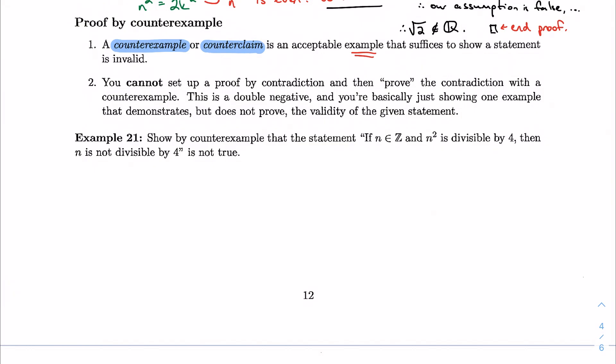But the pitfall that I see with a lot of my students is this one, and that's using a counterexample in a contradiction. That's kind of a double negative. You cannot set up a proof by contradiction and then prove the contradiction with a counterexample, and that's just a double negative.